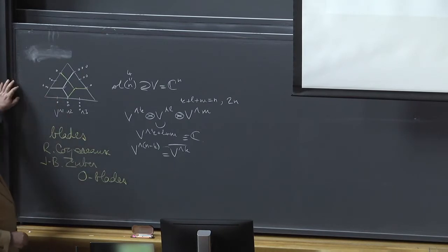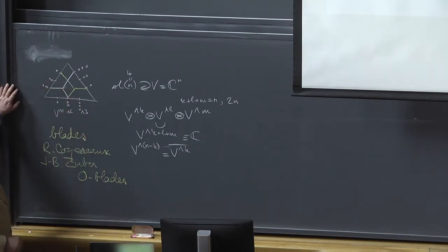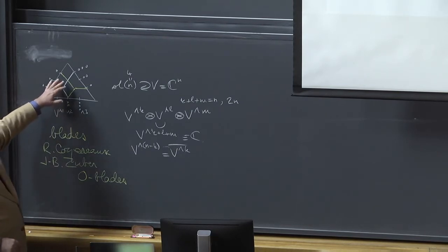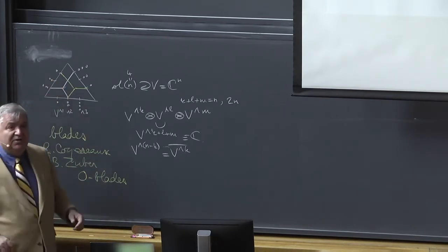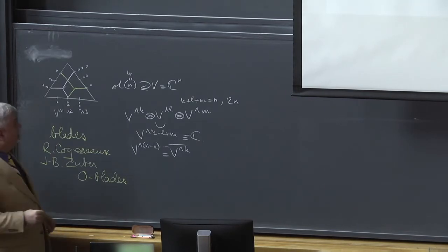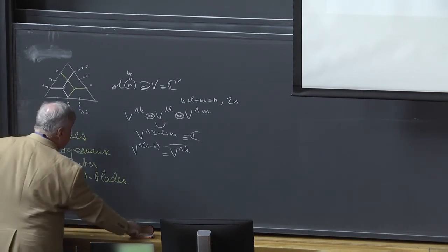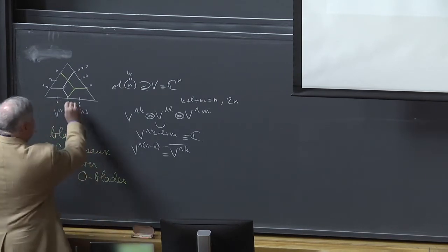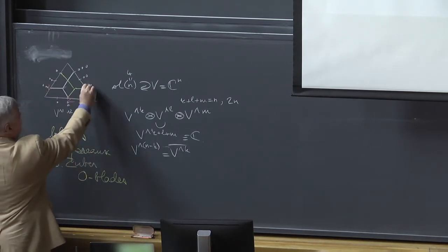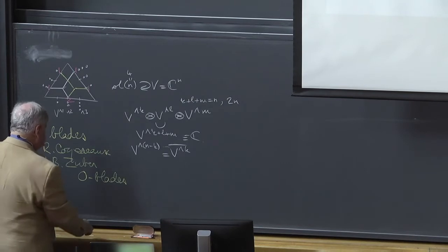The idea is that if you combine these generators, adding and subtracting so that every edge here is positive in this diagram, then you get exactly all the possible intertwiners. You can count the possible intertwiners between representations of SL_N. For instance, putting both of them together, we'll have multiplicities which are 2, 1, 1, 1, 1, 1, and the rest are 0s. So these are blades.